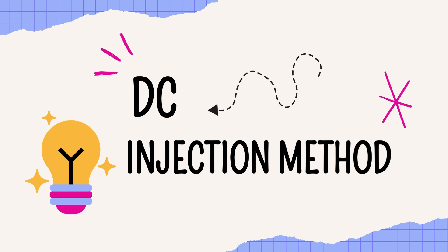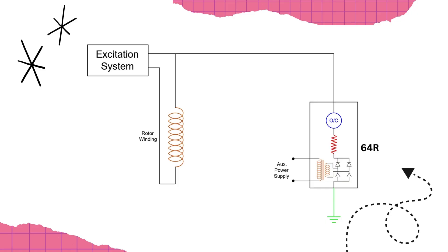Let's dive right into discussing the DC injection method. This procedure involves connecting one terminal of the 64R relay to the rotor winding terminal, while the other is grounded. This relay essentially introduces a DC voltage into the rotor winding. To make this possible, the relay is supplied with auxiliary AC power, which is then turned into DC via a transformer and rectifier setup.